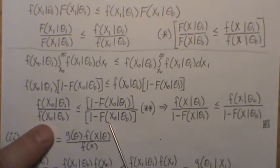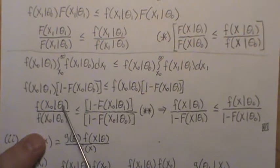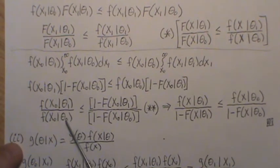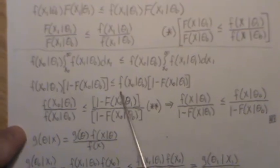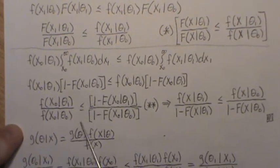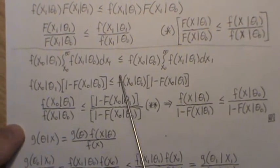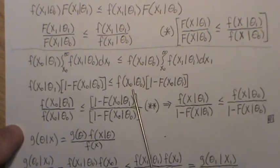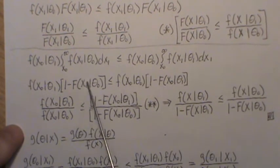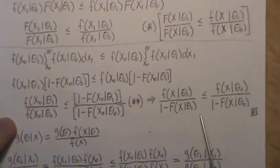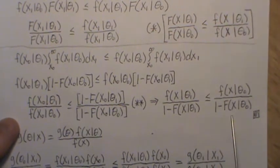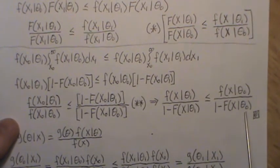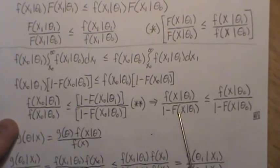If we divide and rearrange, we get our result. Notice that x_0 was picked arbitrarily, so we can just call it x. Look at what we have — this is the hazard rate. It's decreasing in theta: as theta gets bigger, the denominator gets smaller relative to the numerator, so the hazard rate decreases. That's what we wanted to show.